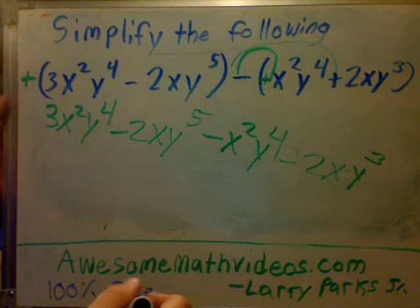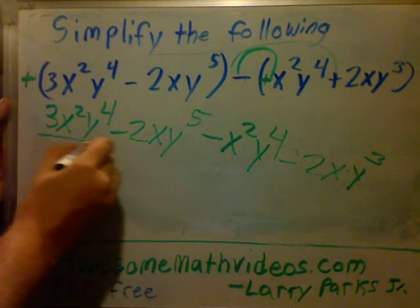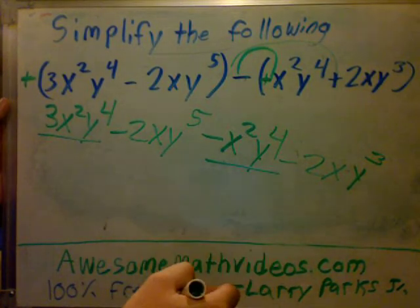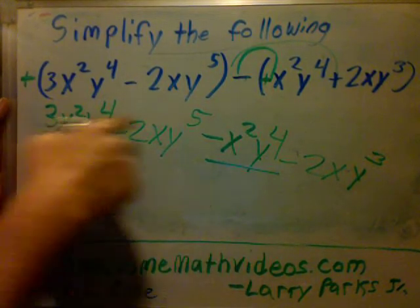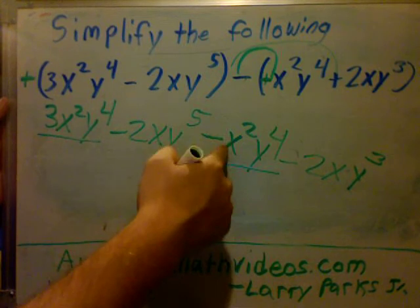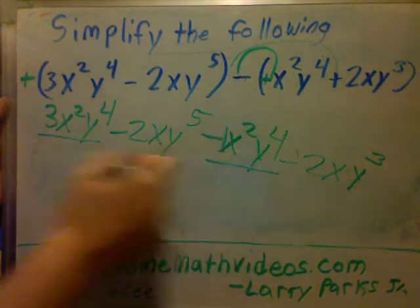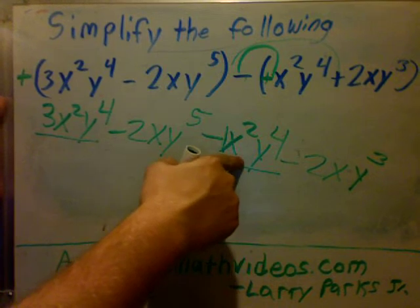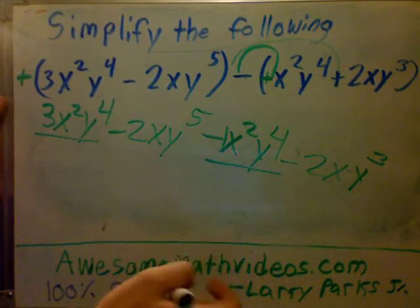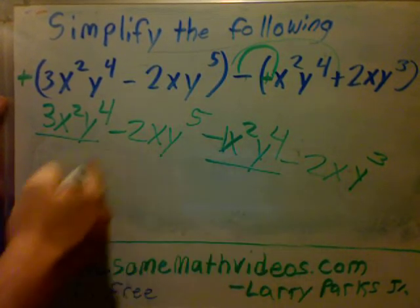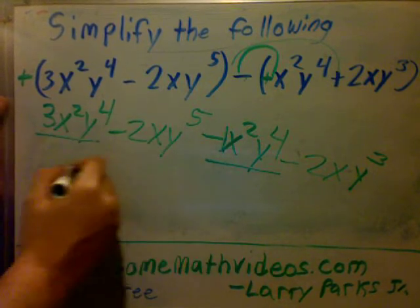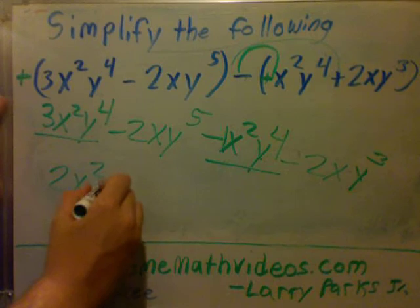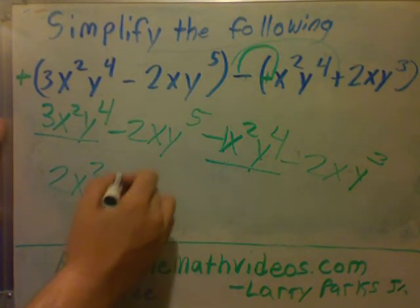Now your next step is to look at this. You have 3x²y⁴ and you have x²y⁴. So you have three of these and minus what number goes there? One. So I got 3x²y⁴ minus 1x²y⁴. Do I have any other x²y⁴? No. So what's 3 minus 1? Two. Yeah, 2x²y⁴.